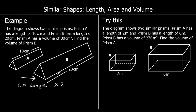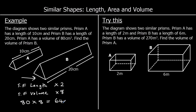For volume, the scale factor is the length scale factor cubed. So 2 cubed is 8, meaning the volume scale factor is times 8. The small shape has a volume of 80, so we do 80 times 8. 8 eights are 64, so 8 times 80 is 640 centimeters cubed. That is the volume of prism B.